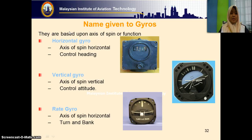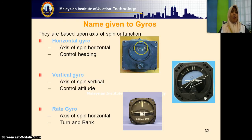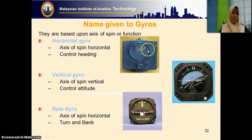The last topic for today is the types of gyro, which depend on the axis of spin. If you open up the heading indicator, you will see a horizontal gyro — the axis of spin is horizontal. That is why we call it a horizontal gyro, and it is normally used to control heading.